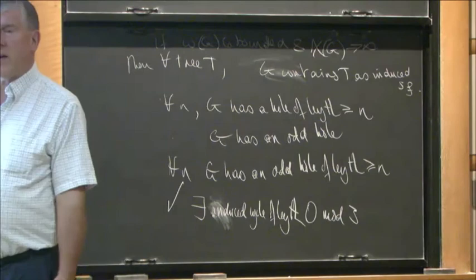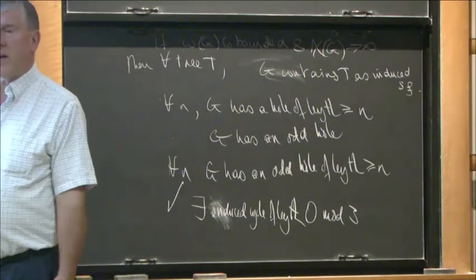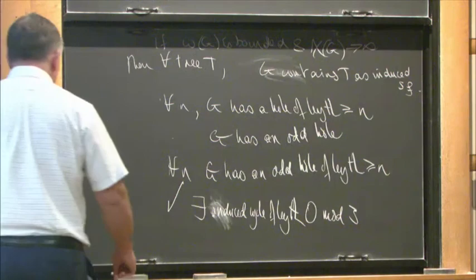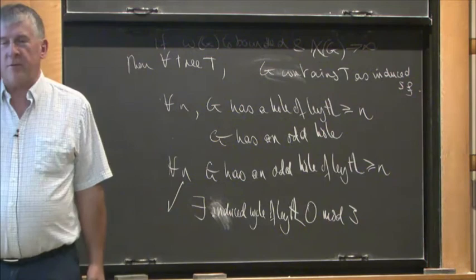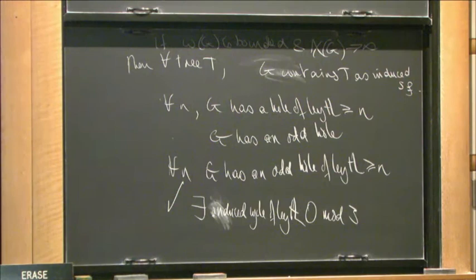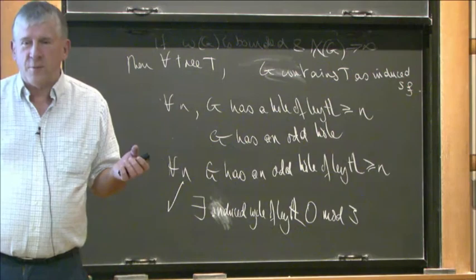The odd hole conjecture is now done — it was recently proved by Thomas and coauthors, just this summer. Alex Scott and I decided we didn't want to read their paper; we wanted to find our own proof. Thomas had told me in about 20 seconds the idea of their proof, and I thought, let's try to recover our own proof. We had some ideas, and we thought this approach would work better for mod 2 rather than mod 3, so we did that, and that's how we proved the result. It actually came from working on the mod 3 problem.